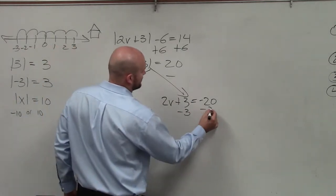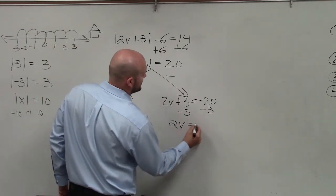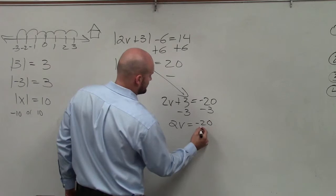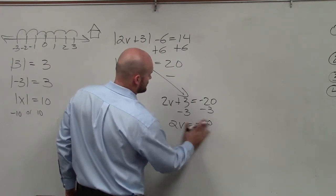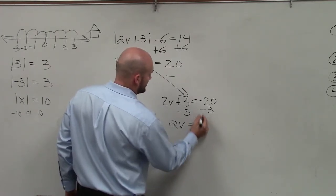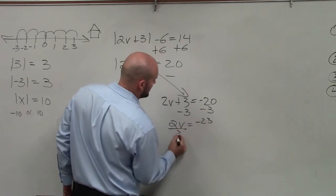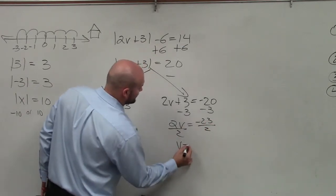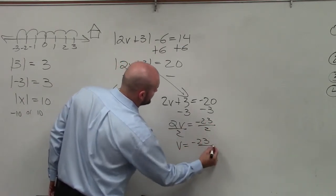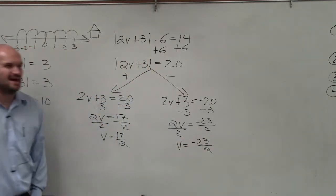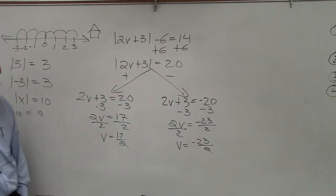And here I'll subtract by 3. 2v equals negative 20. Negative 23. Then divide by 2, divide by 2. V equals negative 23 divided by 2. Not very fun answers, but that's OK. That doesn't mean you did anything wrong.